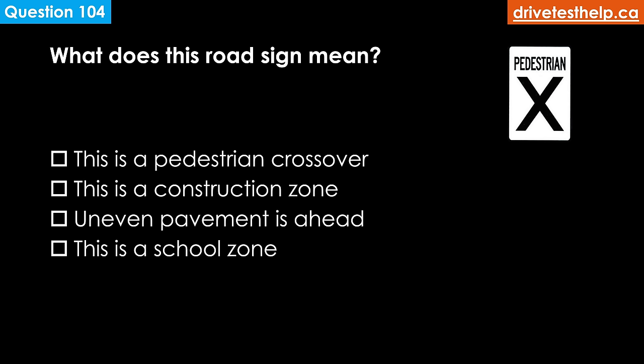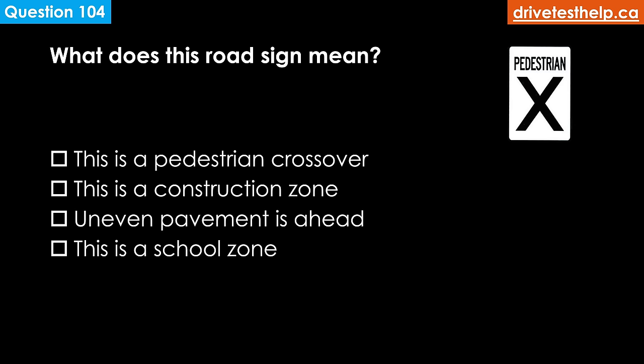What does this road sign mean? Options: this is a pedestrian crossover; this is a construction zone; uneven pavement is ahead; this is a school zone. The correct answer is this is a pedestrian crossover. Be prepared to stop and yield the right of way to pedestrians. You may not pass within 30 meters of a pedestrian crossover.